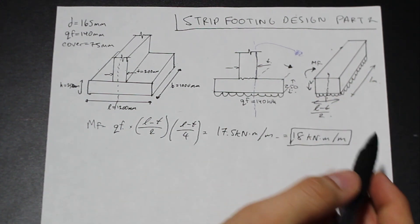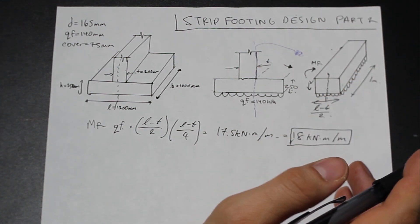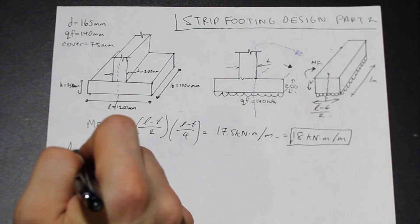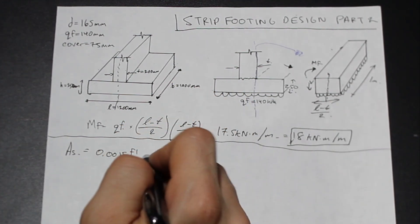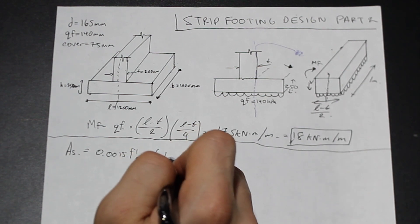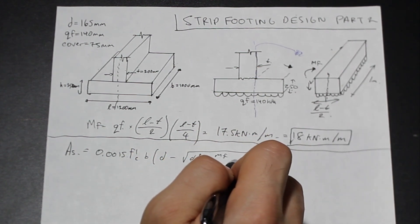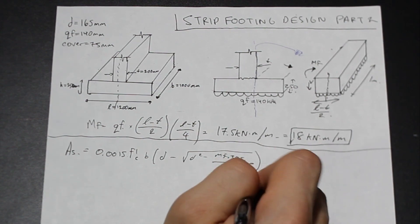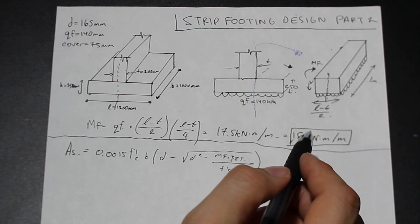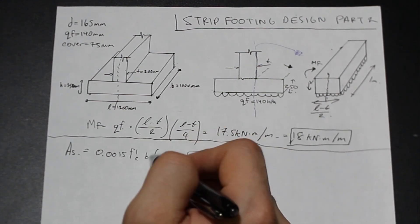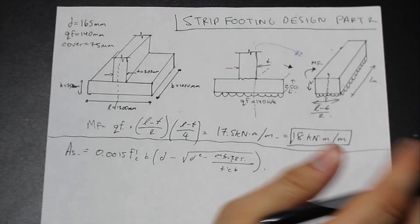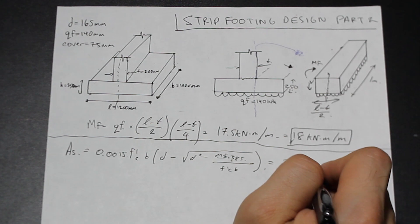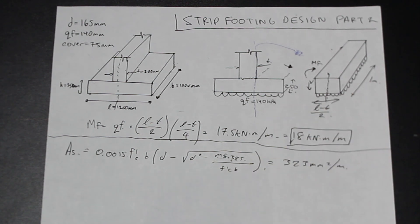Now that we have that, we can plug into the required area of steel formula: AS = 0.0015 · F'c · B · [D − √(D² − MF · 3.85 / (F'c · B))]. Make sure to multiply MF by 10⁶ if using MPa units — that's a very common error. Plugging everything in gives us 323 mm² of steel per meter of footing, which is not very much — this is a very lightly loaded footing, as expected when 250mm is adequate in shear.